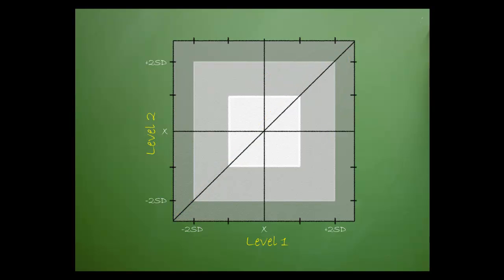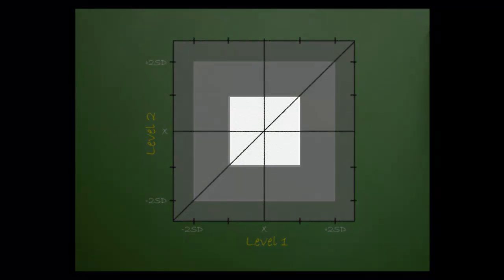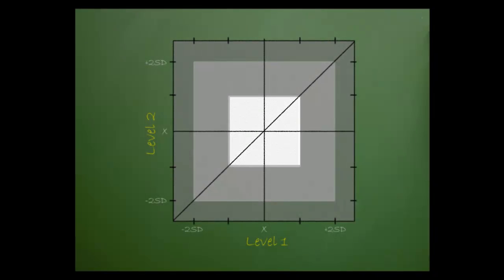Data points are plotted on the graph and will fall into one of three regions. The white square will display points that are within one standard deviation of the mean for both levels.